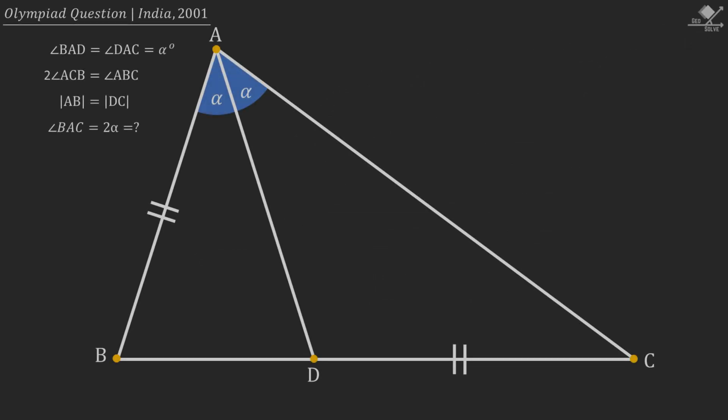In this Olympiad question, angle BAD and DAC are given to be equal. Also, 2 times angle ACB equals angle ABC. Sides AB and DC are equal. And we are asked to find angle BAC, which is 2α.